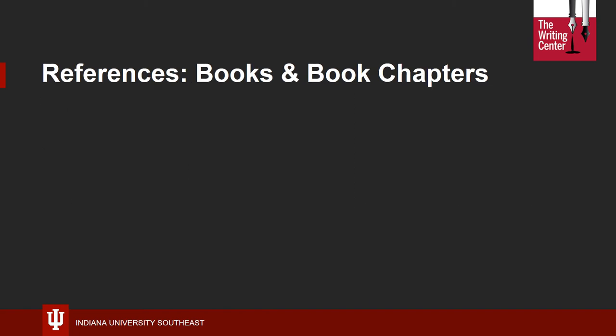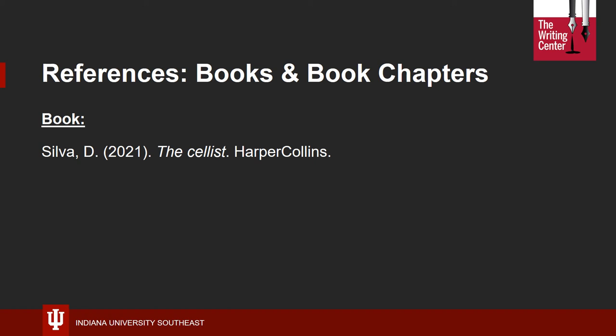For books, begin by providing the last name of the author and their first initial. You will never provide the first name of authors in APA to avoid potential bias. After the author's name, provide the year of publication in parentheses — the year always immediately follows the name of the author or title of the source in the absence of an author, because APA places great value on currency of sources. If you do not have a date, place "n.d." in the parentheses. Next, in italics, provide the title of the book. Note that only the first word of the book title is capitalized. Finally, list the name of the publisher.